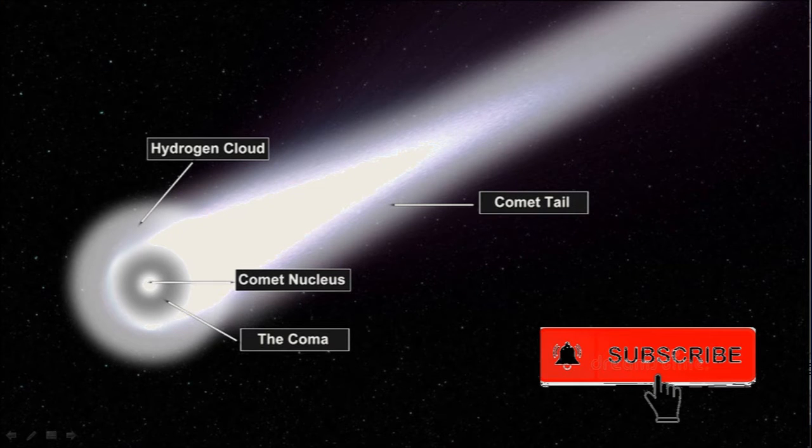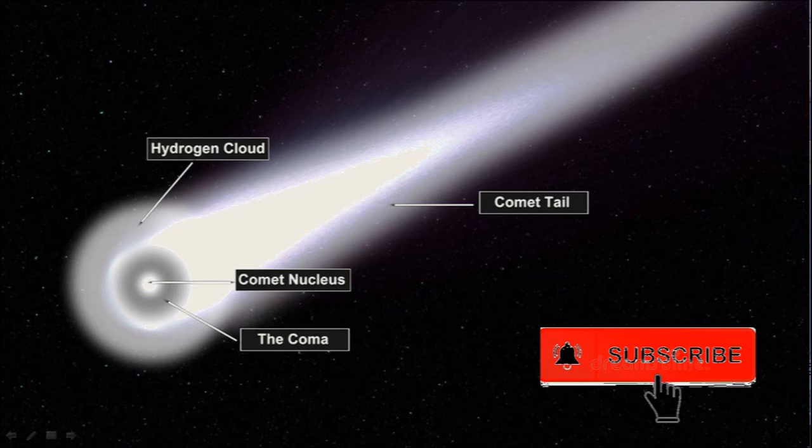The outer surface of the comet head is made up of hydrogen cloud, inner than the coma and central part of the head is called comet nucleus. It has gaseous tail which is known as comet tail.